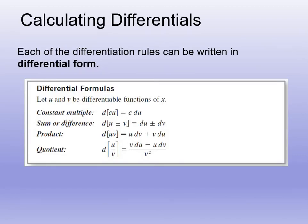Here's a reference table for writing differentials. The differential of c·u is c du. The differential of u ± v is du ± dv. For the product rule: d(uv) = u dv + v du — first times derivative of second plus second times derivative of first. For the quotient rule: d(u/v) = (v du − u dv) / v² — low d-high minus high d-low, all over low-squared.